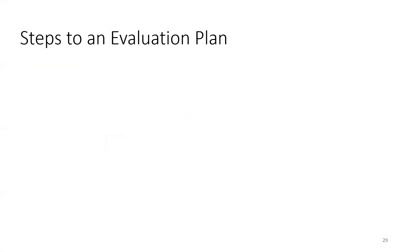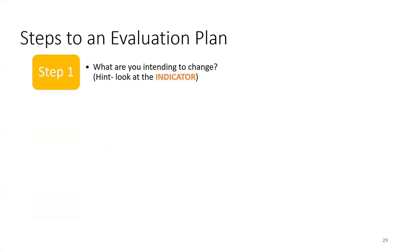To start, have the TTIP objectives handy that you drafted in the framework. The following steps will lead to an outcome tracker, which is the ANA tool for evaluation. Step one is to find the indicator — that is what you're intending to change. And if you remember, in the TTIP objective, it is the 'I' part of your objective.